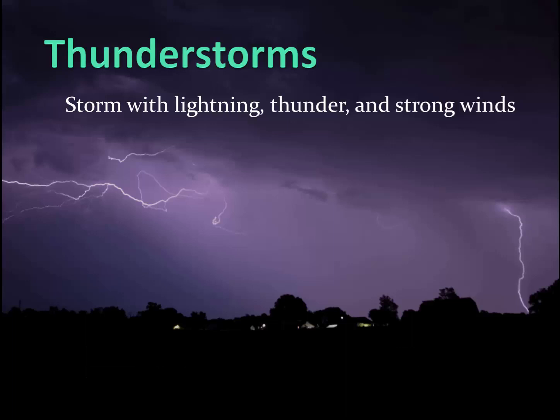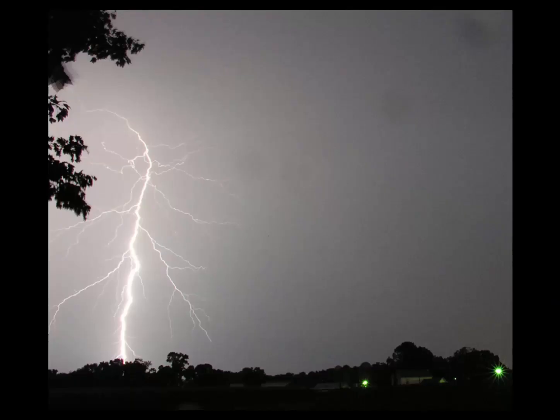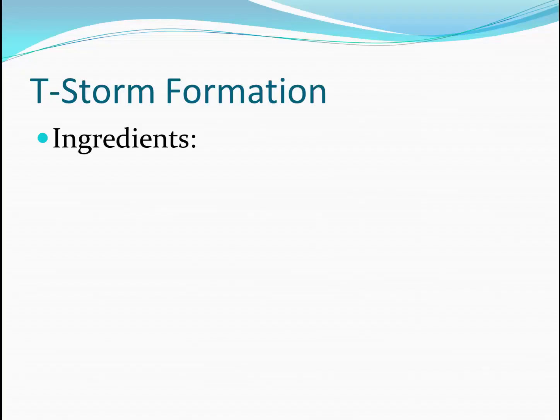Thunderstorms are dramatic, strong storms with lightning, thunder, and very strong winds. Lightning can be beautiful at times. Lightning itself is formed by electrical charge separation as ice particles move around in large cumulonimbus clouds. This deserves a whole video that I'll have to work on later. But for now, let's look at the storm itself.